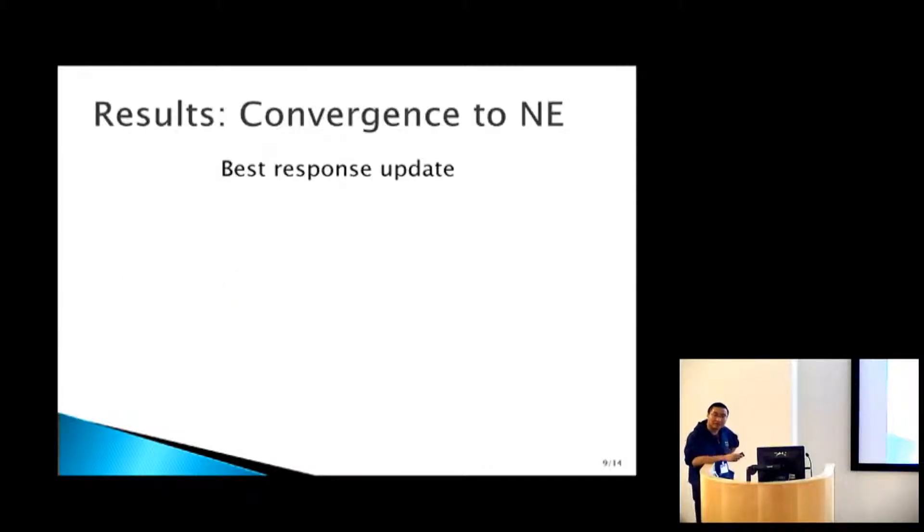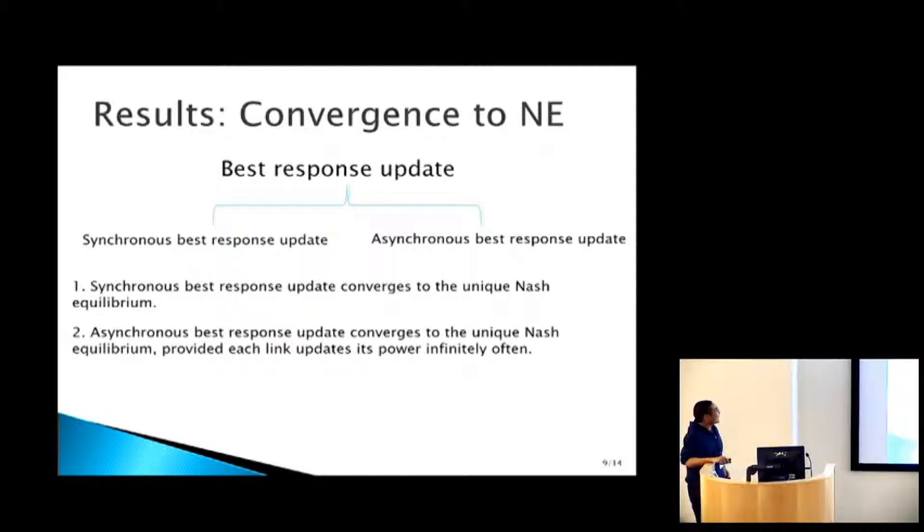Once you have that, a natural dynamics would be a best response update. Best response update is what you think it is. Every iteration, everybody chooses best response to everyone else's power decision in the previous iteration. That's, strictly speaking, synchronous best response update, because everybody's updating. You could alternatively look at asynchronous, which by its name just means not everybody's updating.